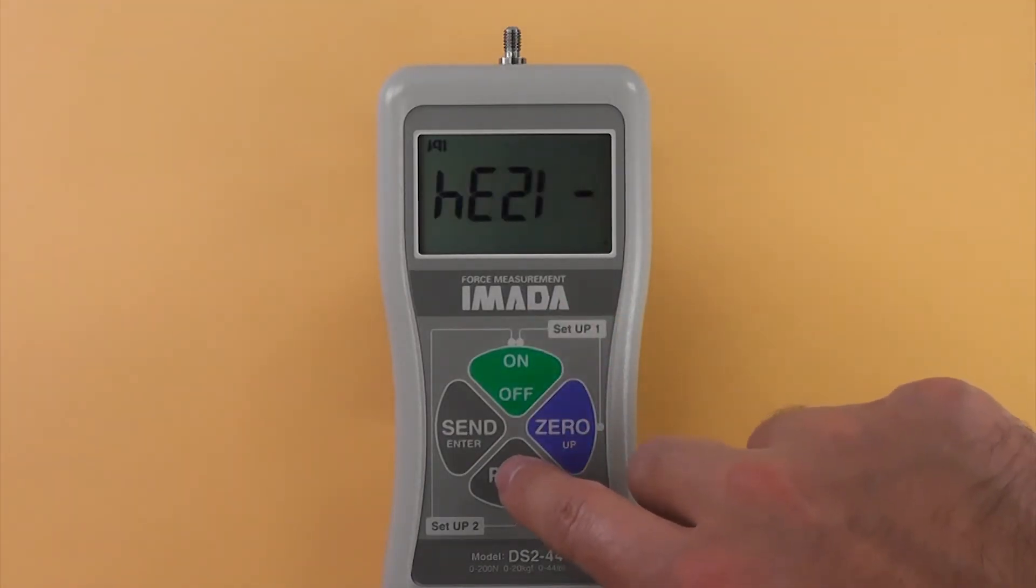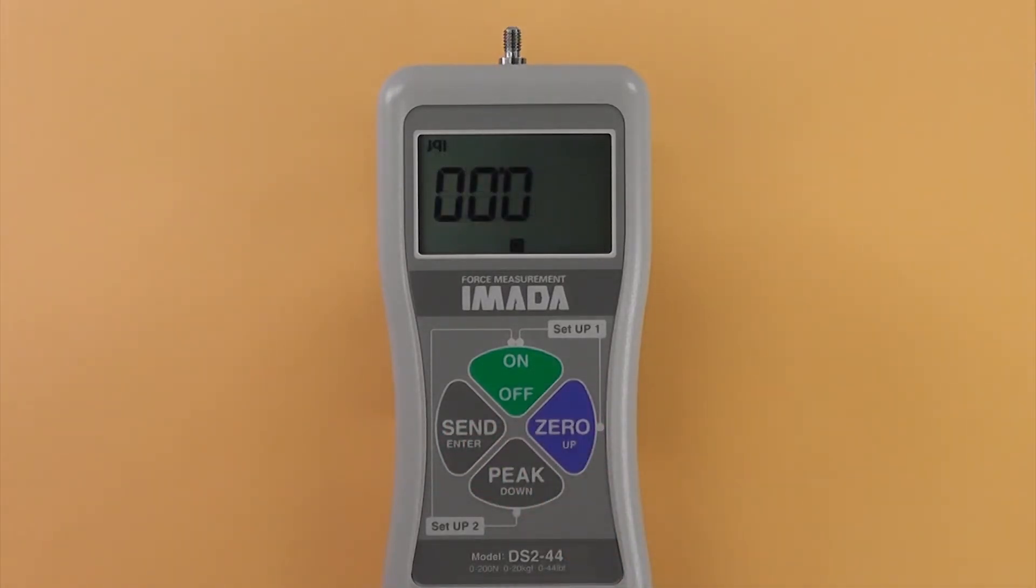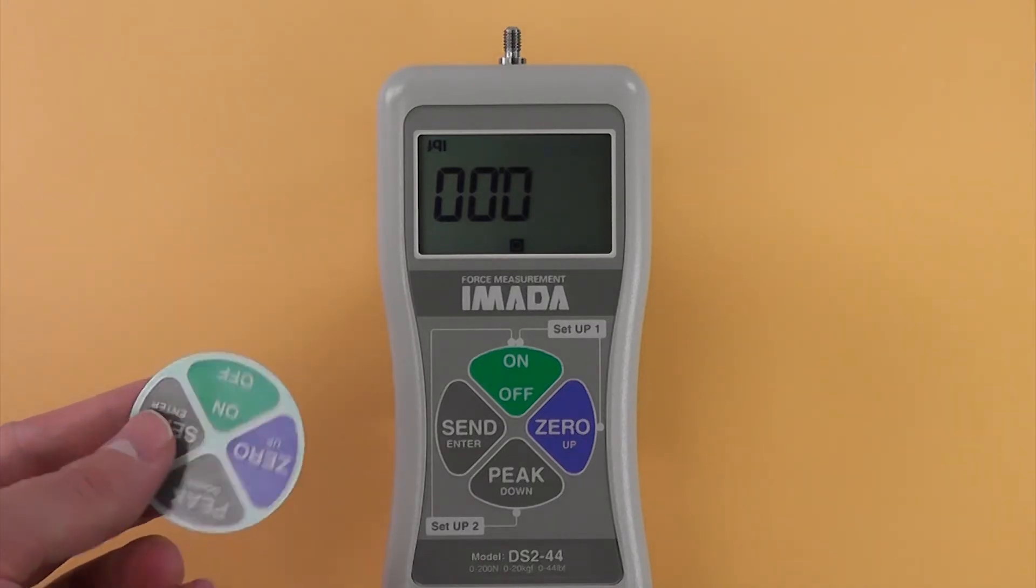Press PEAK to cycle between standard and reverse display. Press SEND to select. For easier readability, the reverse display sticker can be attached to a gauge mounted to a test stand.